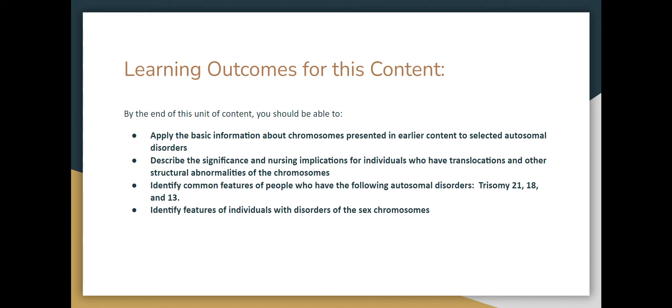We're going to talk about the significance of translocations and briefly touch on other structural abnormalities of the chromosomes — more about that in a smaller video about mutations. We're going to identify common features of people who have the following autosomal disorders: trisomies 21, 18, and 13. They are the most commonly found in their full form in the human population. We're also going to identify features of individuals with disorders of the sex chromosomes, such as Klinefelter syndrome, Turner syndrome, and trisomy X.